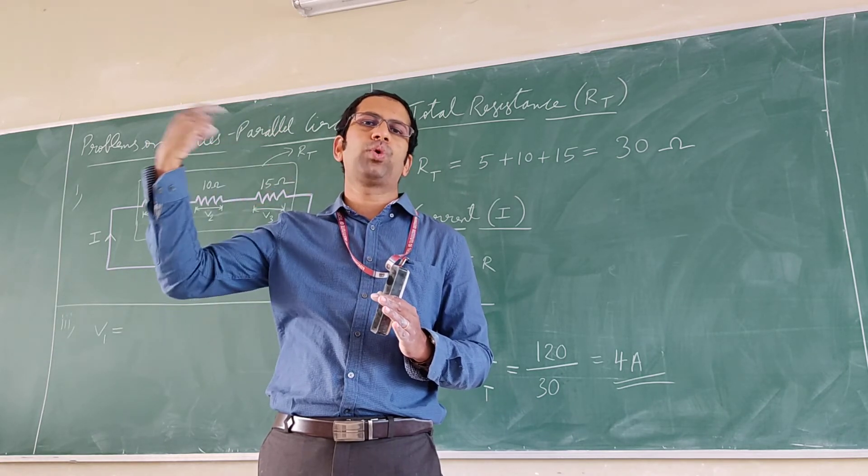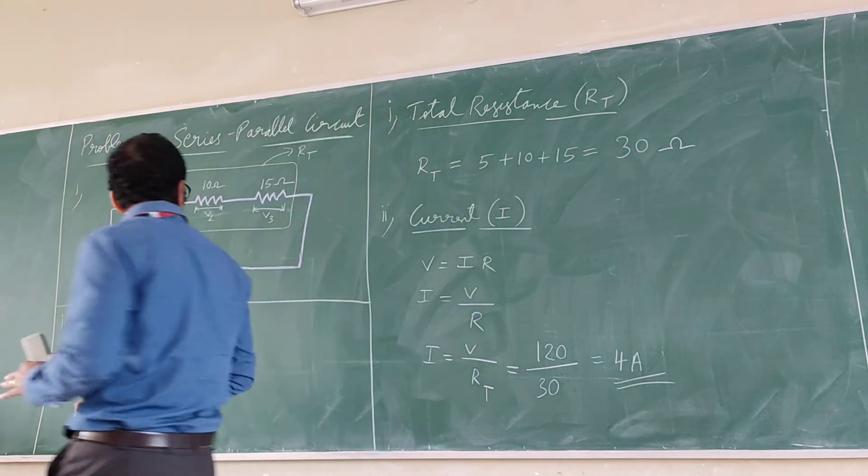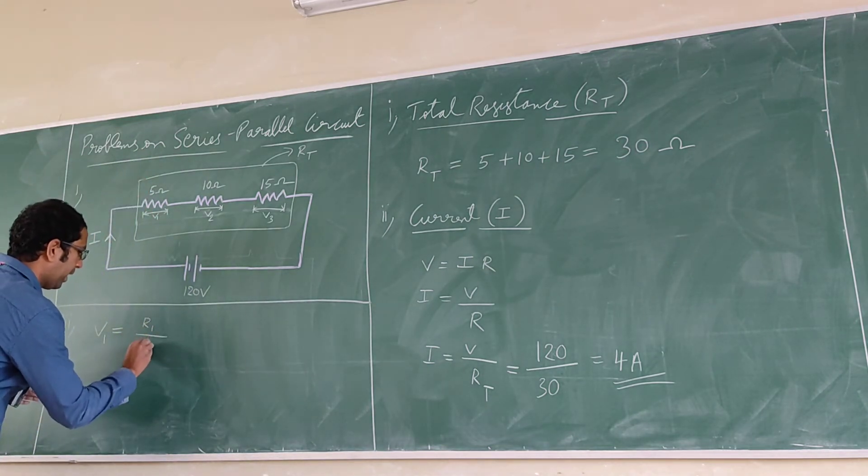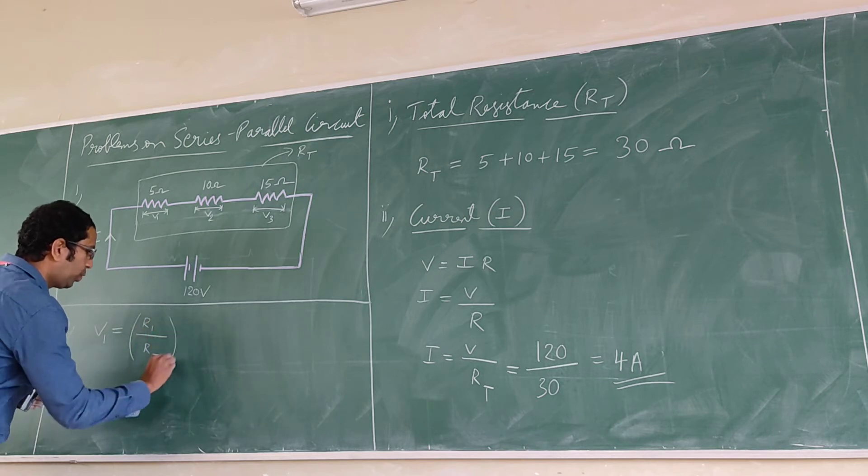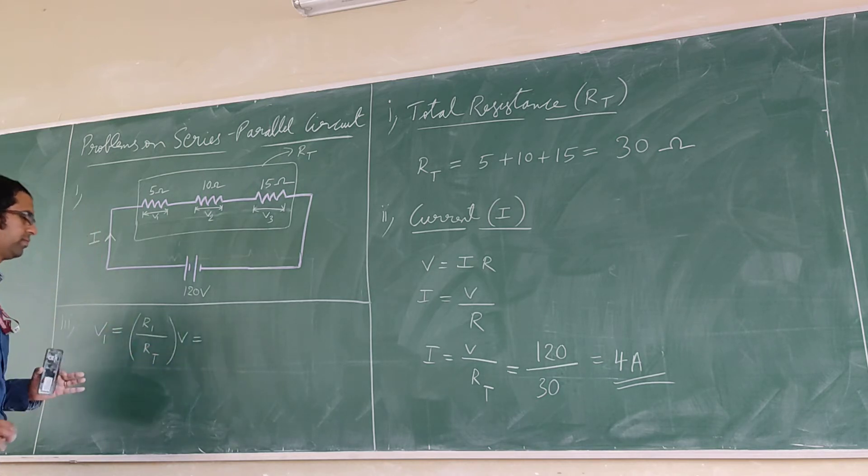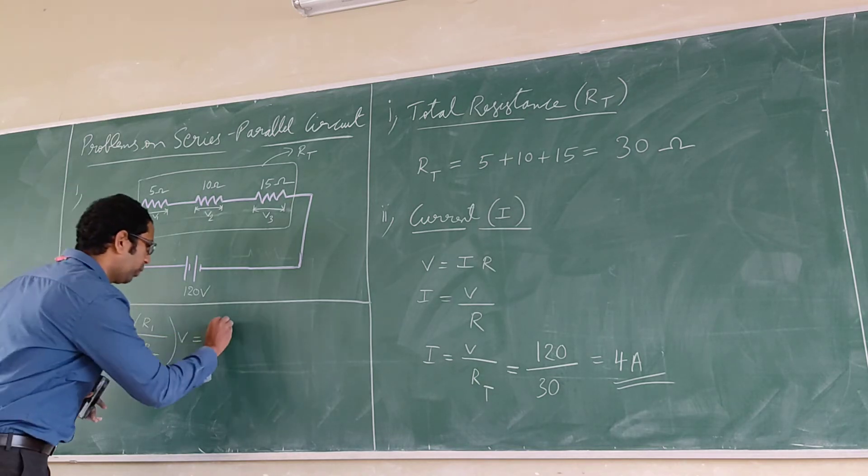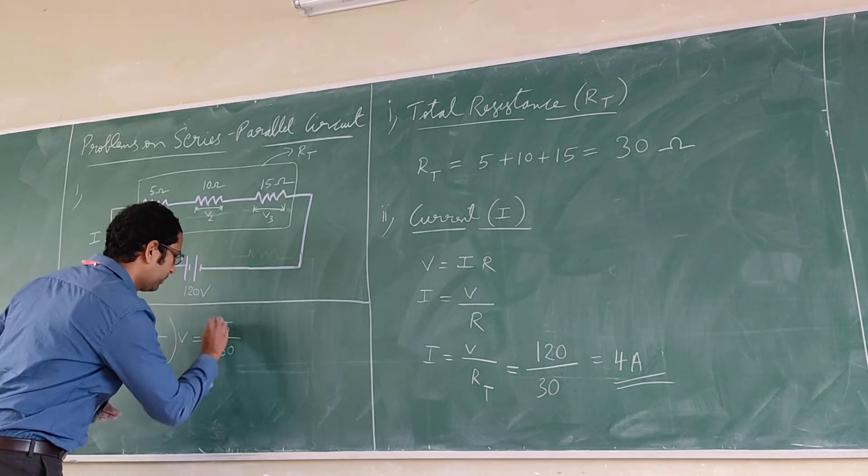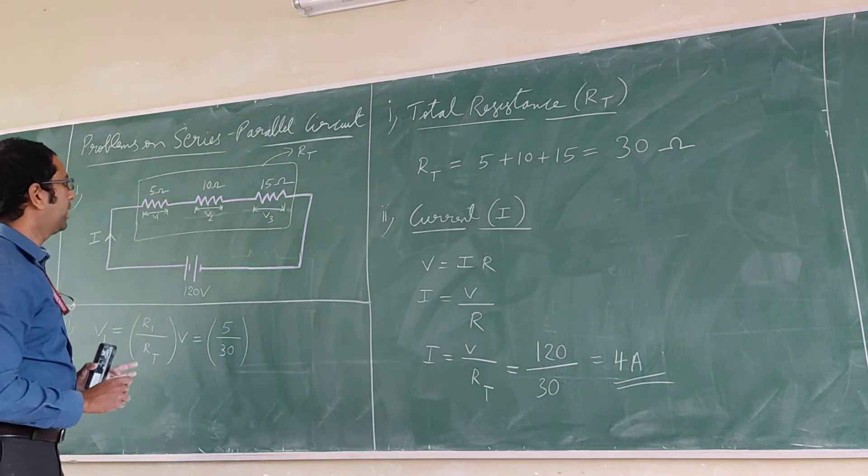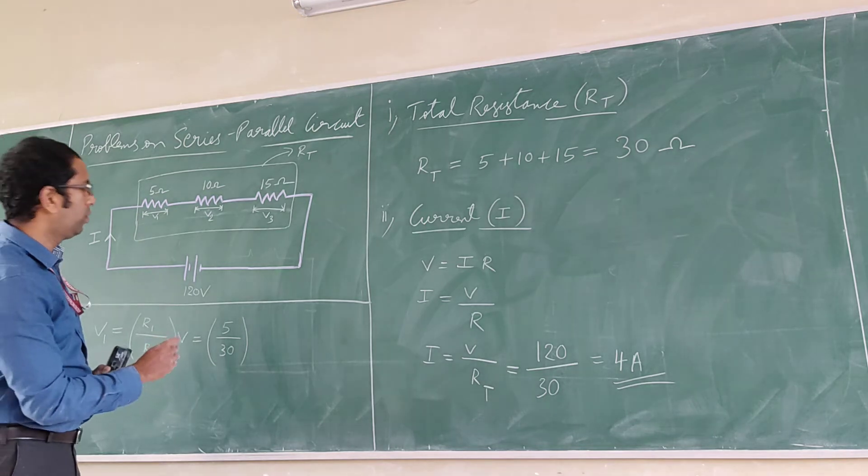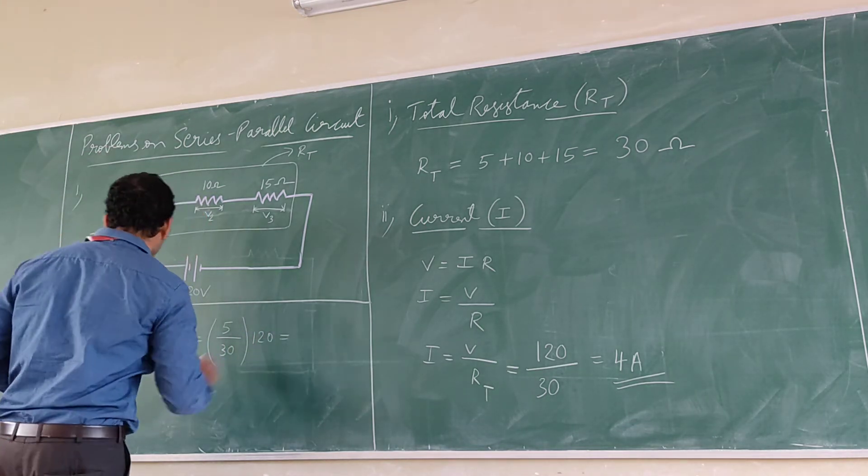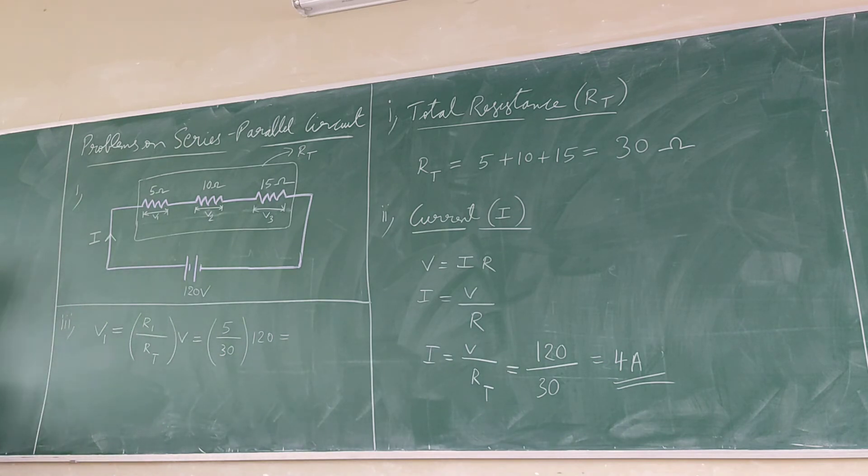So V1 is equal to R1 divided by R suffix t into V. So R1 is 5 ohm, total Rt that will be 30 ohm, and the total voltage value is 120. So 5 by 30, that will be 20 volts.